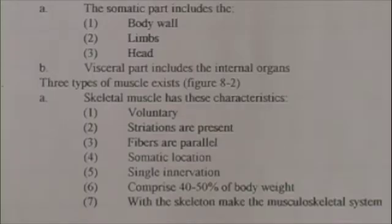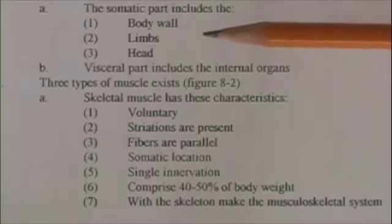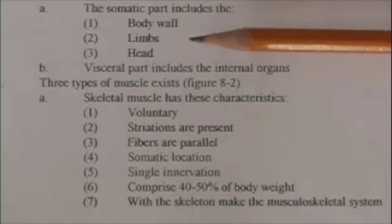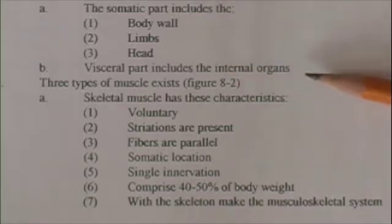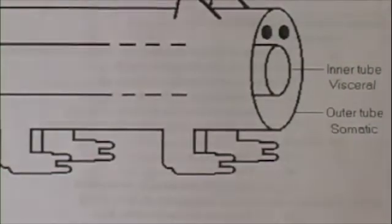To understand muscles, we have to understand that an animal is built with two parts. There's an outer part, essentially the body tube, and then there's the inner part, the so-called inner tube of the body. Figure 8-1 describes these two parts.